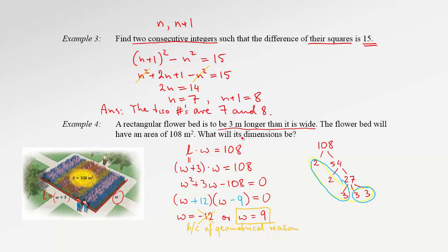Okay, since the question calls for dimensions, we are obligated to give the length as well. So, we can say length equals W plus 3, which is 9 plus 3, so it's 12. And now we're ready to give the formal answer. The dimensions of the flower bed are 9 by 12 meters.